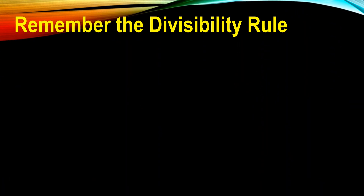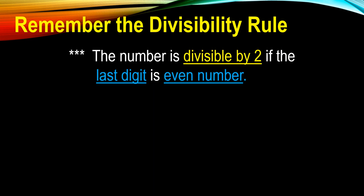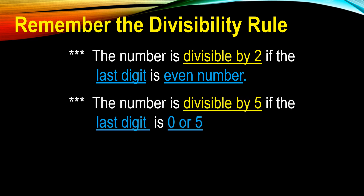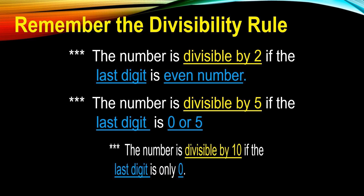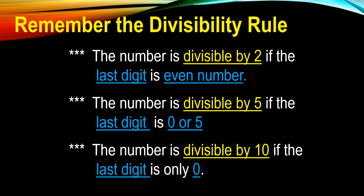Now, to identify numbers that are divisible by the given number, always remember the divisibility rule. The number is divisible by 2 if the last digit is an even number. An even number is a number which can be divided by 2 to make a whole number. The number is divisible by 5 if the last digit is 0 or 5. And the number is divisible by 10 if the last digit is only 0.